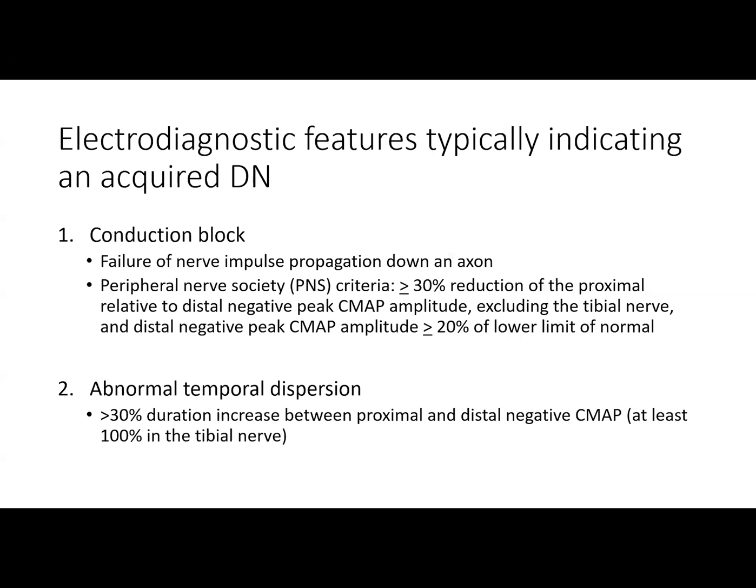There are some electrodiagnostic features that typically indicate an acquired demyelinating neuropathy. The first would be conduction block, which is a failure of nerve impulse propagation down an axon that can occur due to the focal or segmental demyelination in acquired demyelinating neuropathies. The Peripheral Nerve Society criteria for conduction block is greater than or equal to 30% reduction of the proximal relative to distal negative peak CMAP amplitude, excluding the tibial nerve, and distal negative CMAP amplitude greater than or equal to 20% of the lower limit of normal.